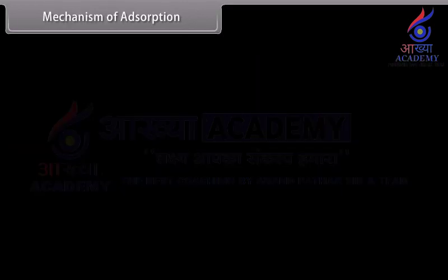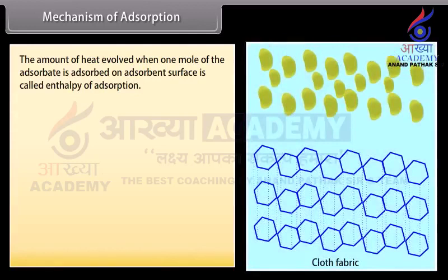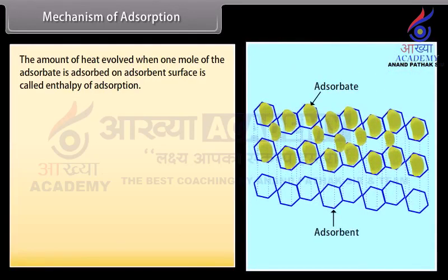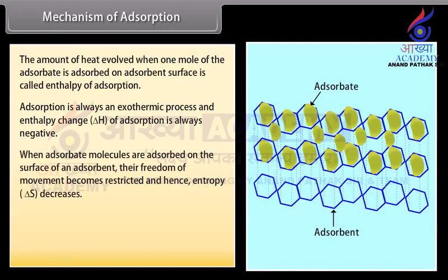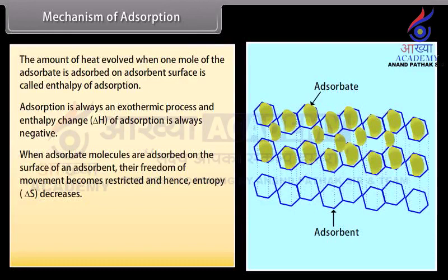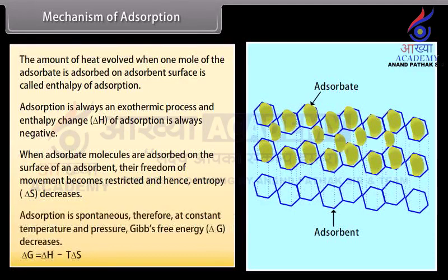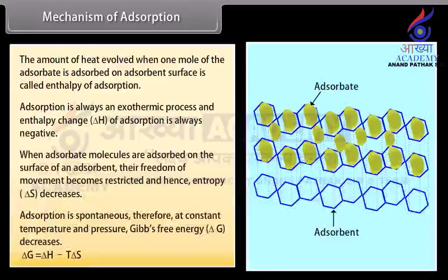Mechanism of adsorption. The amount of heat evolved when one mole of the adsorbate is adsorbed on adsorbent surface is called the enthalpy of adsorption. Adsorption is always an exothermic process; the enthalpy change of adsorption is always negative. When adsorbate molecules are adsorbed on the surface of an adsorbent, their freedom of movement becomes restricted and hence entropy decreases. Adsorption is spontaneous; therefore, at constant temperature and pressure, Gibbs free energy decreases. Delta G equals Delta H minus T times Delta S.